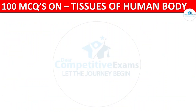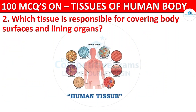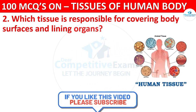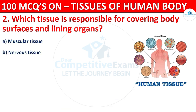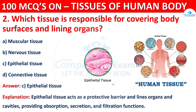Question number two: which tissue is responsible for covering body surfaces and lining the organs? Your options are muscular tissue, nervous tissue, epithelial tissue, or connective tissue. The correct answer is C, that is epithelial tissue. Epithelial tissue acts as a protective barrier and lines organs and cavities, providing absorption, secretion, and filtration functions.